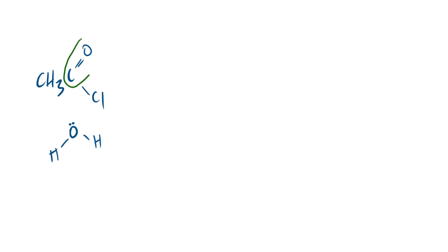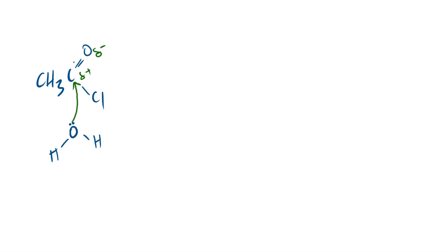If we look at our carbon double bond oxygen, there is a dipole — a region of relative negativity on the oxygen and relative positivity on the carbon. In your exam you don't need to include these delta charges. The curly arrow — really important — you do it from the lone pair, not from somewhere else. Always do it from the lone pair, and it comes onto the relatively positive carbon. That gives us an extra bond here.